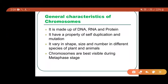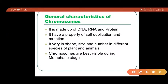The general characteristics of chromosomes: chromosomes are made of 30 to 40 percent DNA, 50 to 65 percent RNA, and 0.5 to 10 percent protein. Chromosomes have the property of self-duplication, which means they can duplicate into sister chromatids, and the property of mutation, which means they can change their genomic sequence.